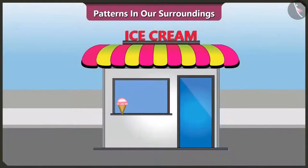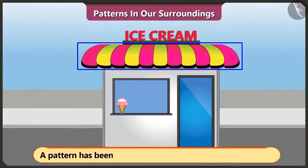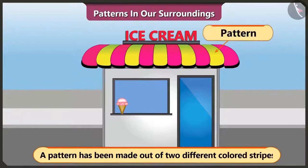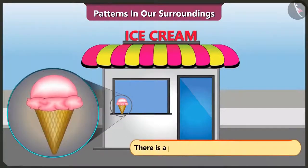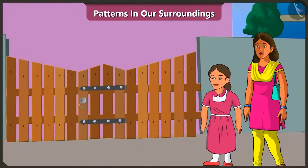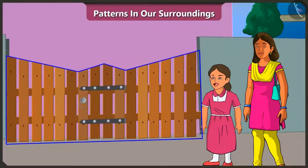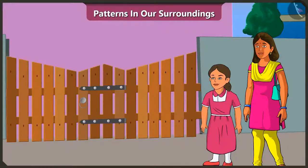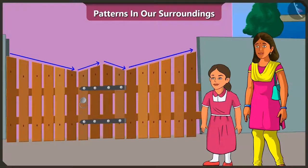Now look at the roof of this ice cream shop. Does it have a pattern? Yes, here two different color stripes have been used to make a pattern. And the ice cream cone also has a pattern. Yes, Vinny, we talked all the way and reached home so soon. Hey, the door of our house also has a pattern. Rightly said, Vinny. The strips here have a pattern of big to small, small to big — initially big to small and then small to big strips have been used.